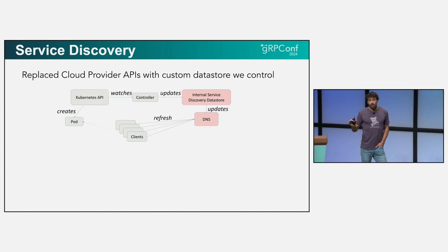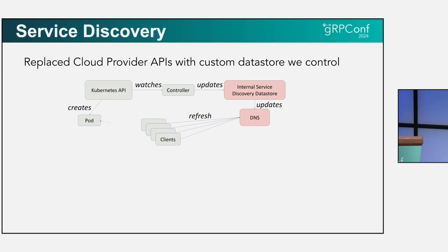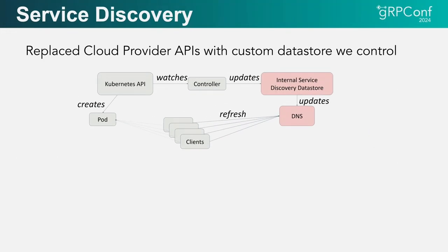Endpoint propagation was really the problem we were trying to solve because it slowed down deployments, and in some cases it even caused outages as the DNS information was out of date compared to what was happening in the data centers. So in order to solve these problems, we replaced the cloud provider APIs with our own data store. This works around the API rate limit that we were hitting and gave us predictable endpoint propagation time.